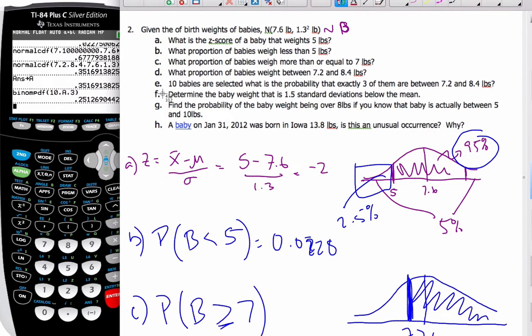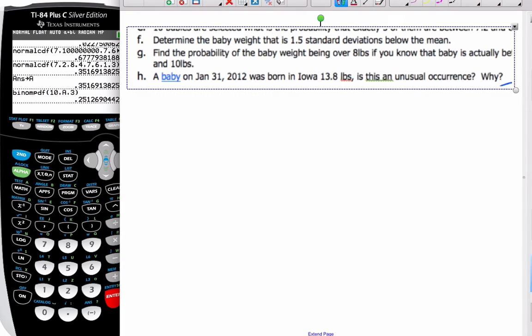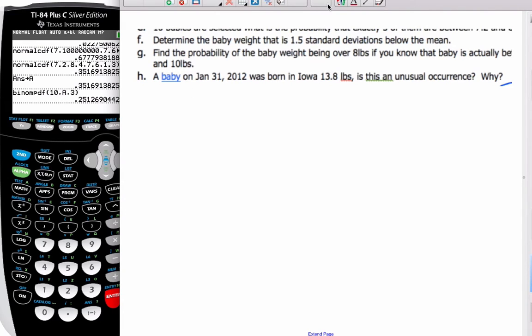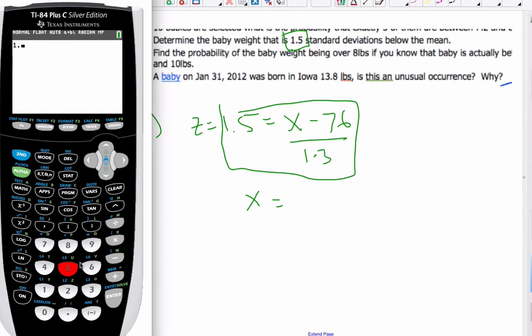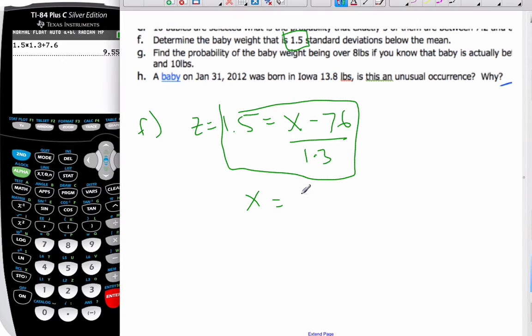Now determine the baby weight that is 1.5 standard deviations below the mean. This value means that is my Z-score, negative 1.5. I want to find the baby weight, so that's X minus the mean 7.6 over standard deviation of 1.3. From this equation I can solve for X. I get 1.5 times 1.3 plus 7.6, which gives me X is 9.55.